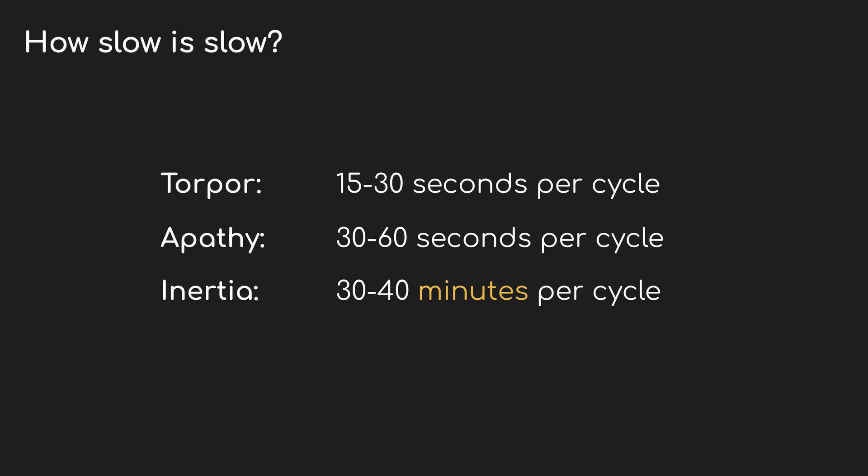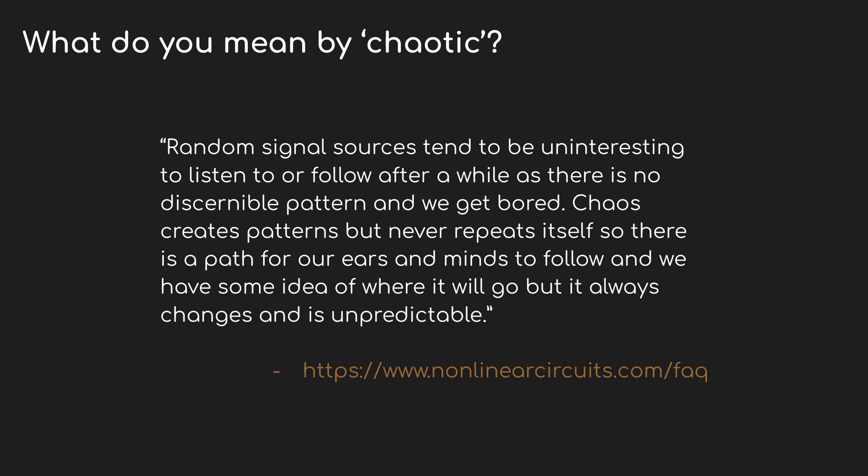Let's start by taking apart that statement: slow chaotic modulation. Compared to most LFOs, it can be really very slow. The fastest of the sloths, called torpor — but moving forward I'm just going to call it fast — repeats its cycle in 15 to 30 seconds. The medium one, apathy, cycles every 30 to 60 seconds. And the slow one, inertia, takes 30 to 40 minutes to repeat. There are other sloth modules, like the Sloth DK, that can take hours to complete a cycle. I've used the words repeat and cycle a lot, but it's important to remember that it doesn't strictly repeat — it will evolve over time and give you a similar but different chaotic pattern.